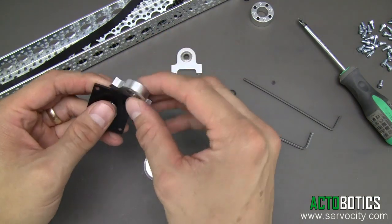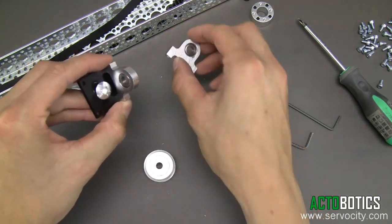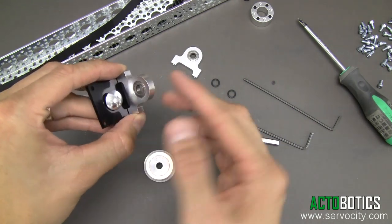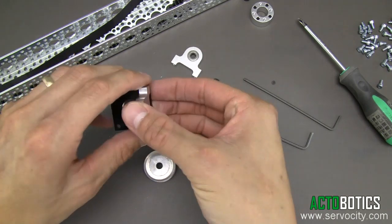Next, we're going to grab one of our ball bearing pillow blocks. We have two of them, quarter inch bore. The side that the ball bearing is pressed into needs to face the middle of this plate.